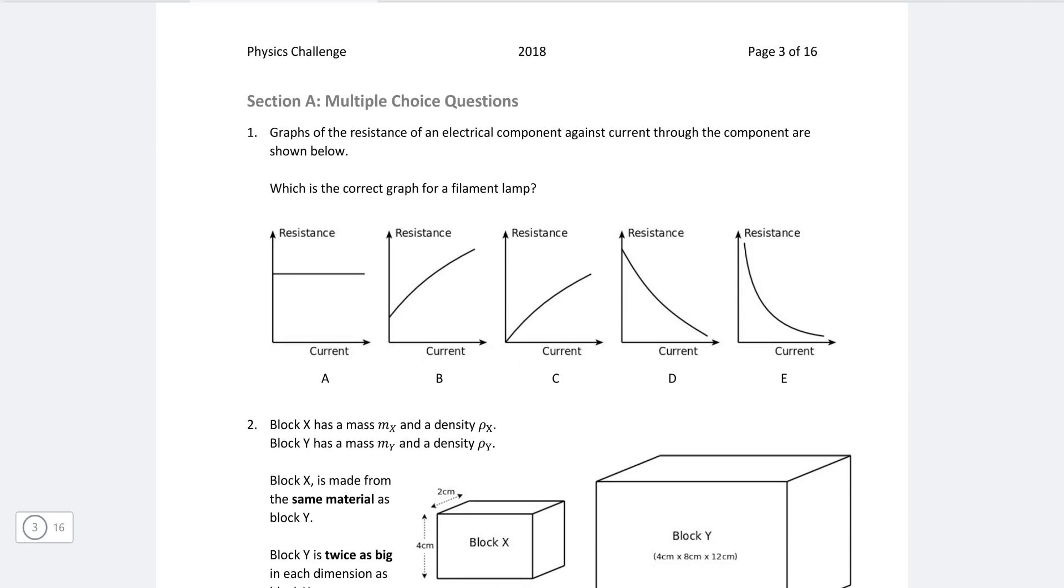Question one. So we have some graphs across here. They're graphs of resistance against current. Just note that typically the shapes that are taught in class are for voltage against current, so we're expecting some differences. Which is the correct graph for a filament lamp?